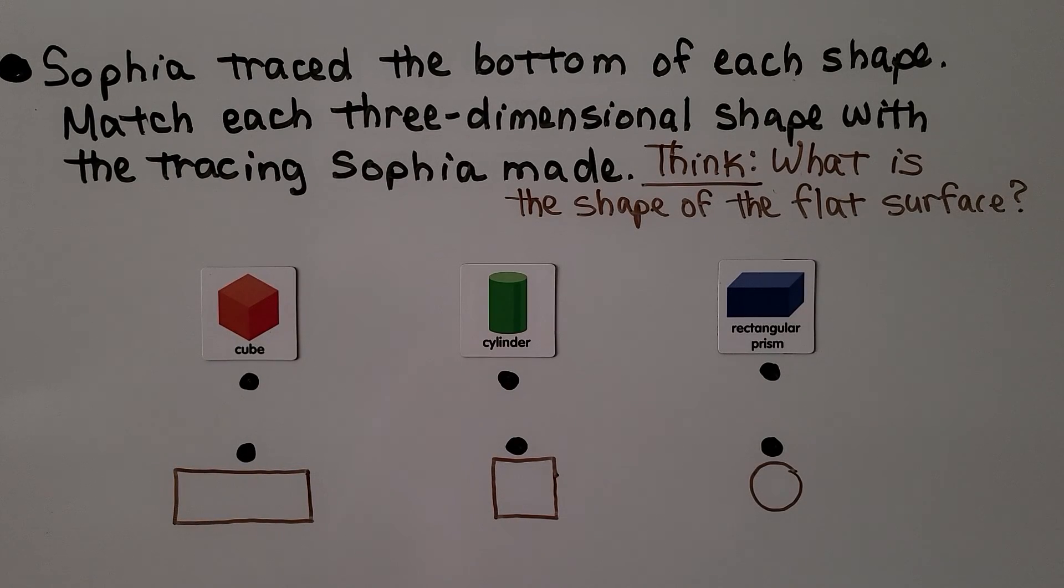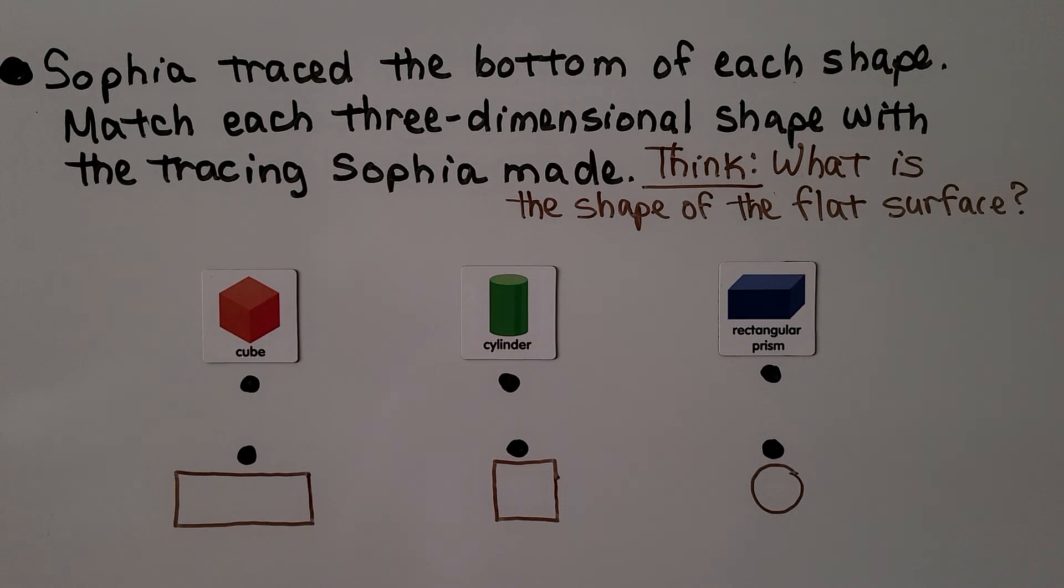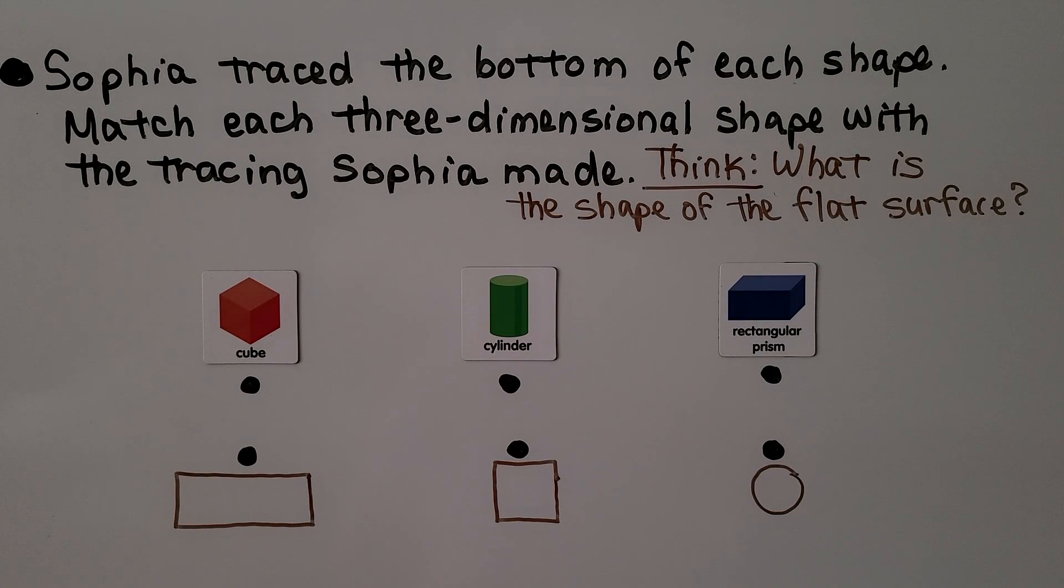Sophia traced the bottom of each shape. Match each three-dimensional shape with the tracing Sophia made. And we think, what is the shape of the flat surface?